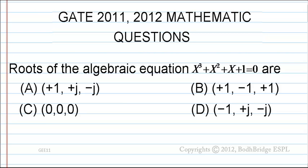Roots of the algebraic equation x³+x²+x+1=0 are: The options are (A) +1, +j, -j; (B) +1, -1, +1; (C) 0, 0, 0; (D) -1, +j, -j.